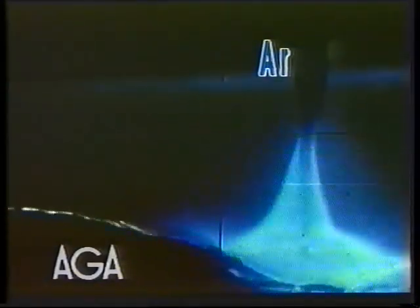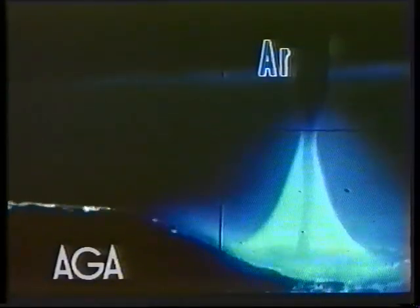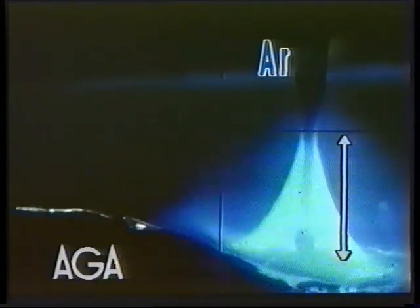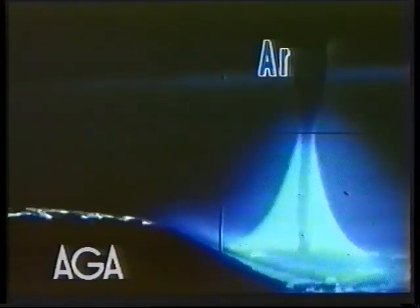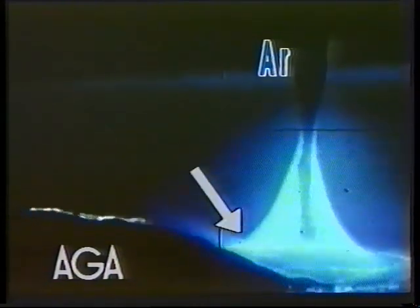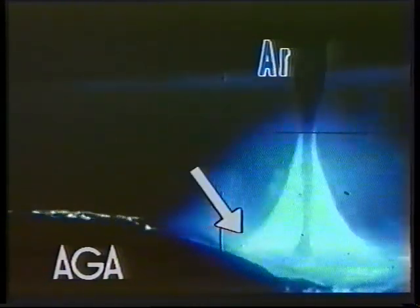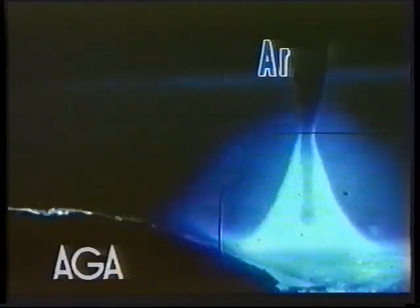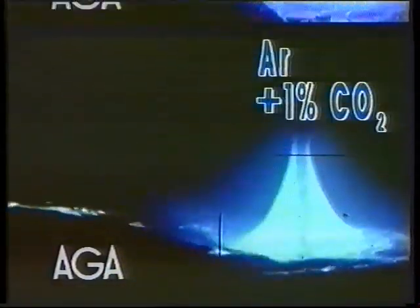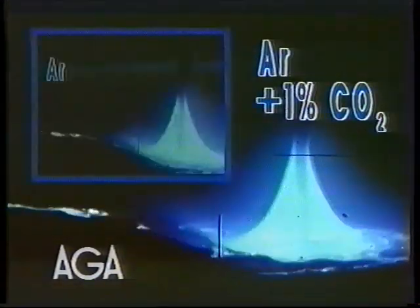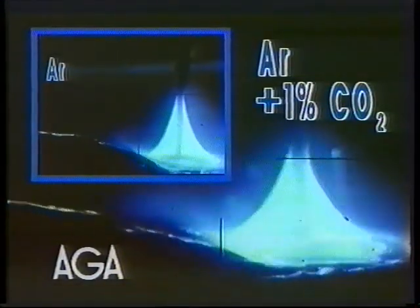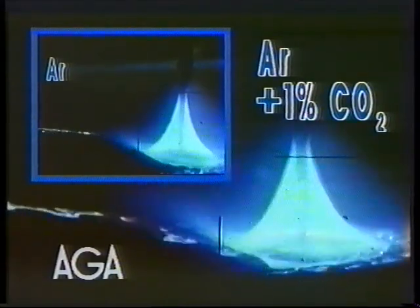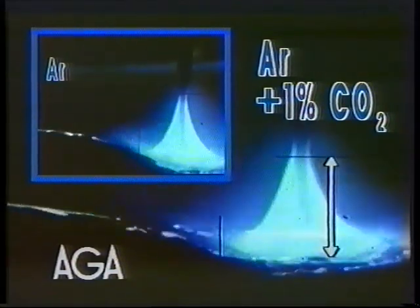Pure argon gives an extremely long liquid column in the melted part of the electrode. The pressure on the weld pool is low. 1% carbon dioxide in argon decreases the length of the melted column.